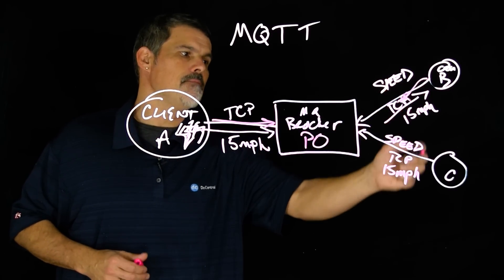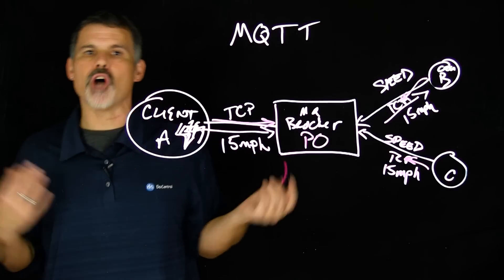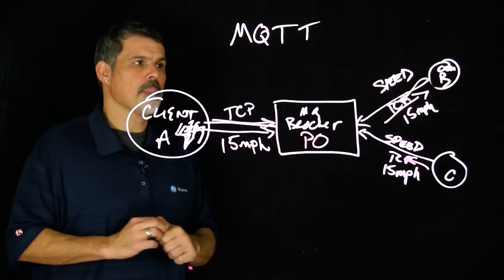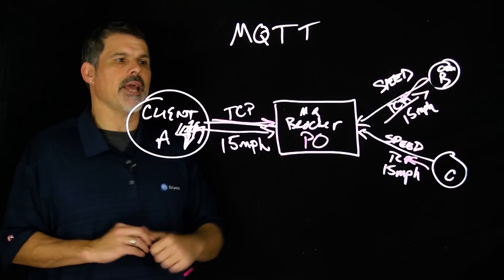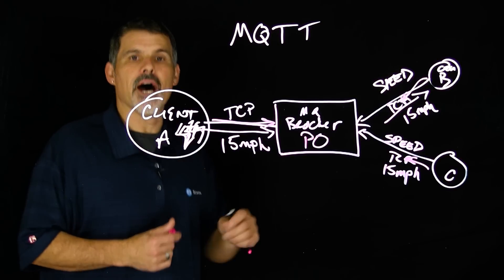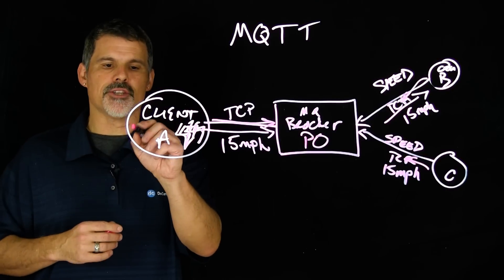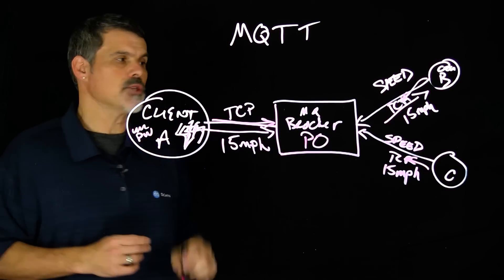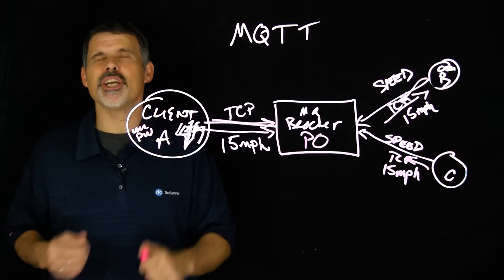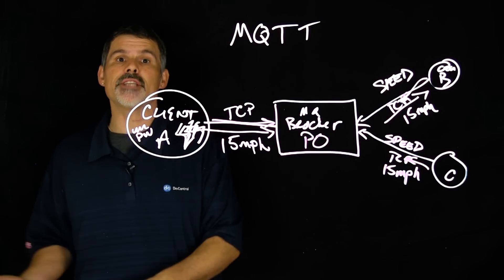Any one of these clients can publish or receive messages based on a certain topic. From a security standpoint, MQTT does allow a username and password authentication. And so these clients can certainly log on with password authentication. Version 3.11 has become an Oasis standard.